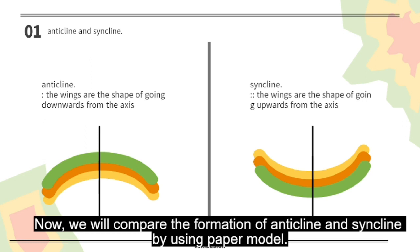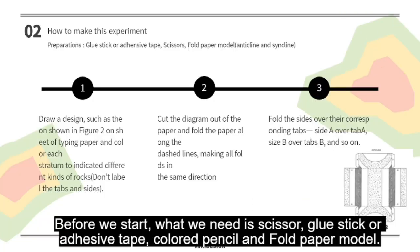Now, we will compare the formation of anticline and syncline by using paper model. Before we start, what we need is scissors, adhesive tape or glue stick, color pencil, and fold paper model.